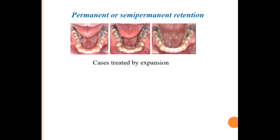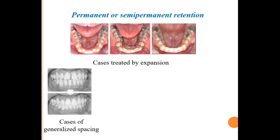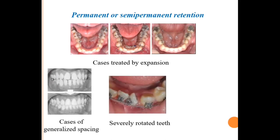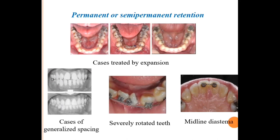The third category is cases requiring permanent or semi-permanent retention. These include cases treated by expansion, cases of generalized spacing, severely rotated teeth, and midline diastema cases. In all these cases there is a high chance of relapse, so maintaining the achieved result for a longer period is highly recommended and requires a retentive method that stays in place for longer than normal.